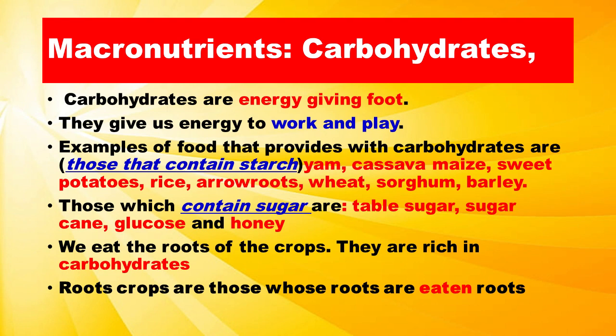Foods which contain sugar are table sugar, sugar cane, glucose, and honey. We eat the roots of some crops because they are rich in carbohydrates. Root crops are those whose roots are eaten.